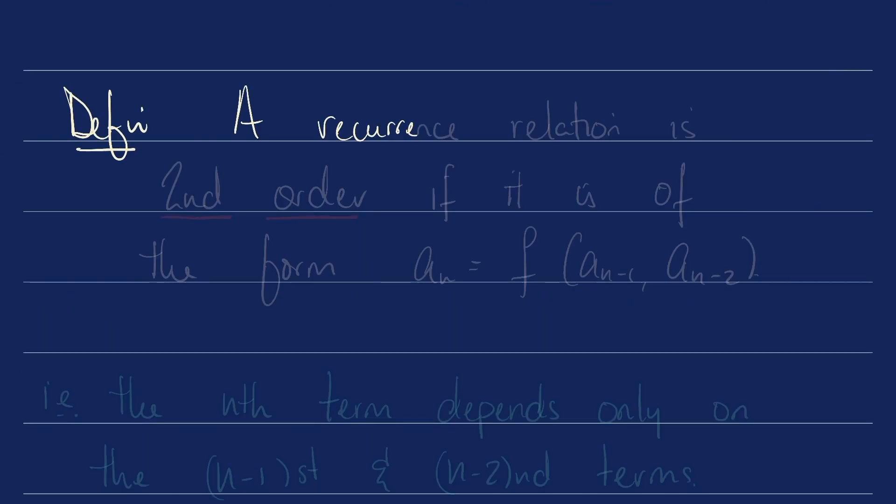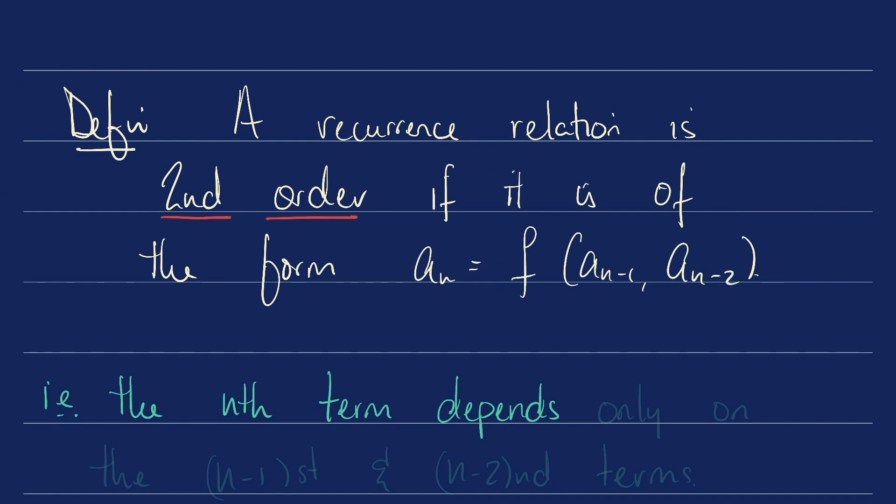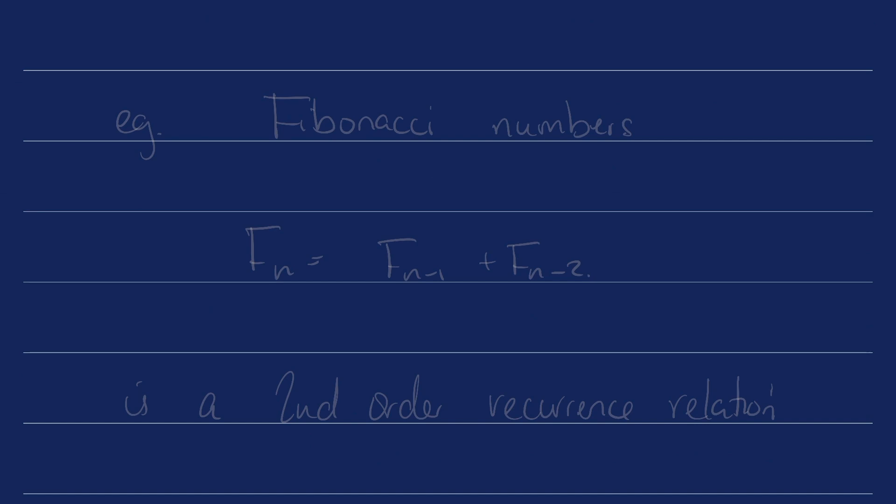Definition. A recurrence relation is second order if it is of the form a_n = some function of a_(n-1) and a_(n-2). That is, the nth term depends only on the (n-1)st and (n-2)nd terms. We already have an example of this. Example. The Fibonacci numbers. F_n = F_(n-1) + F_(n-2). This is a second order recurrence relation.